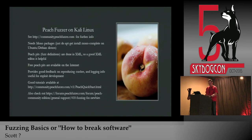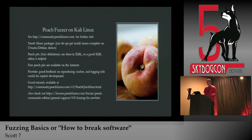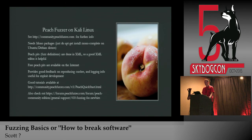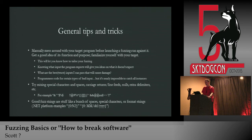Peach Fuzzer on Kali Linux — I've only run it a little bit; I've mostly run it on Windows. It's basically the same as on Windows, the only difference being it needs the Mono packages — the open-source version of the .NET framework. If you're on Ubuntu or a Debian distro you can just do 'apt-get install mono-complete.' The directions on peachfuzzer.com will walk you through that as well.